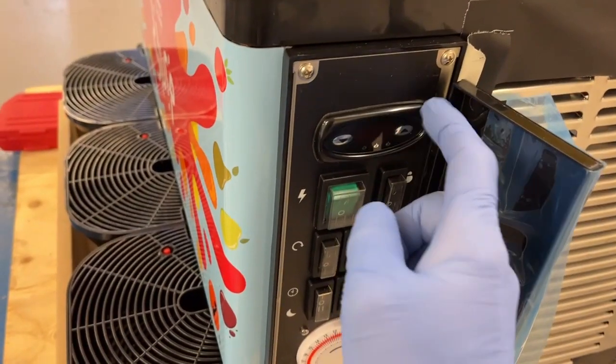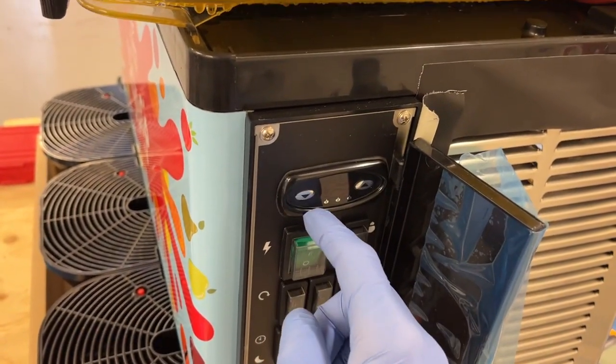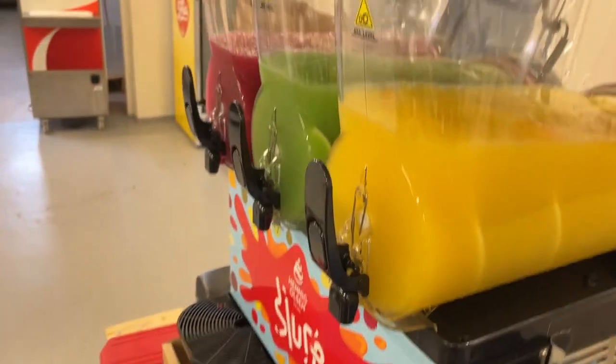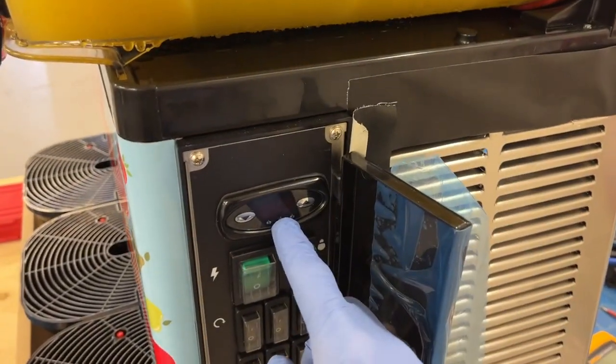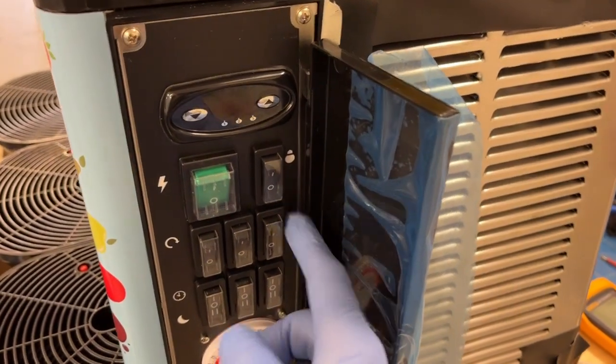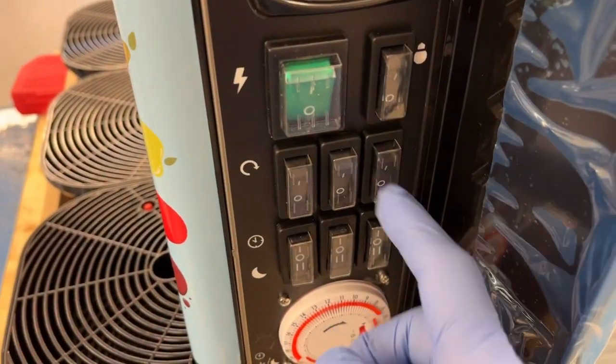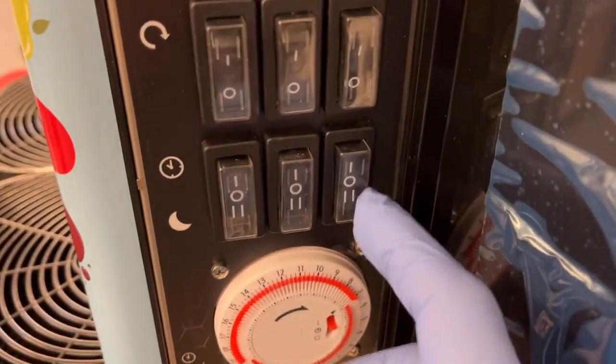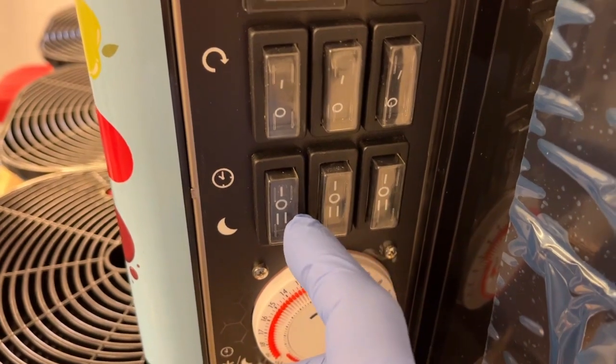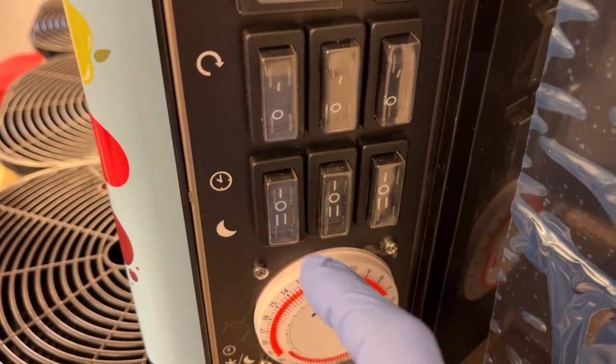So we have the control panel here. This on the top here is just a thermostat that shows the temperature in all bowls. This is the main switch, and this is the light switch, and this is the auger, the spirals inside the bowls.